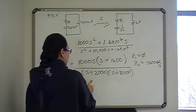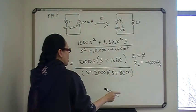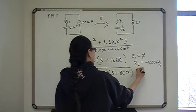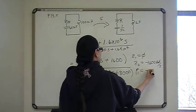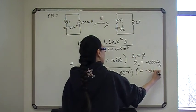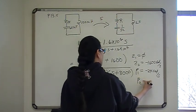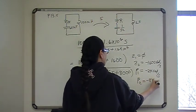In the denominator for poles, so poles are where the denominator is zero. So you have one pole at P1 is equal to negative 2k radians per second. And then P2, pole 2 is P2 is negative 8k radians per second.